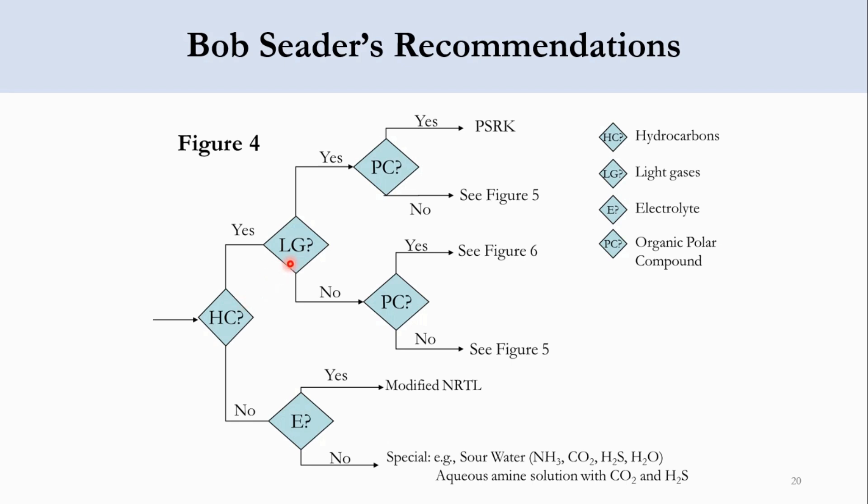While hydrocarbons are present but no light gases, we check whether it is organic polar compound. If yes, go to Figure 6. If no, go to Figure 5. So for two cases we go to Figure 5: first, hydrocarbon with light gases but no organic polar compound; second, hydrocarbon with no light gases and no polar compounds.